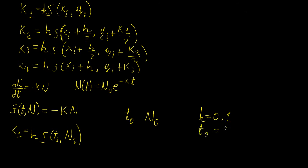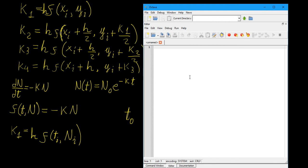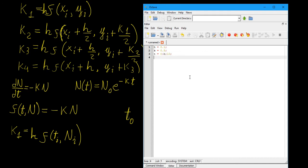Let's choose an initial time of 0 and go all the way to 10 seconds. Let's choose a value for the rate constant — not to confuse it with the k coefficients — let's make it 0.5. And the initial population size, let's make it 100. It's a bit trivial to write down the equations by hand, so let's open Octave and start writing things in there.